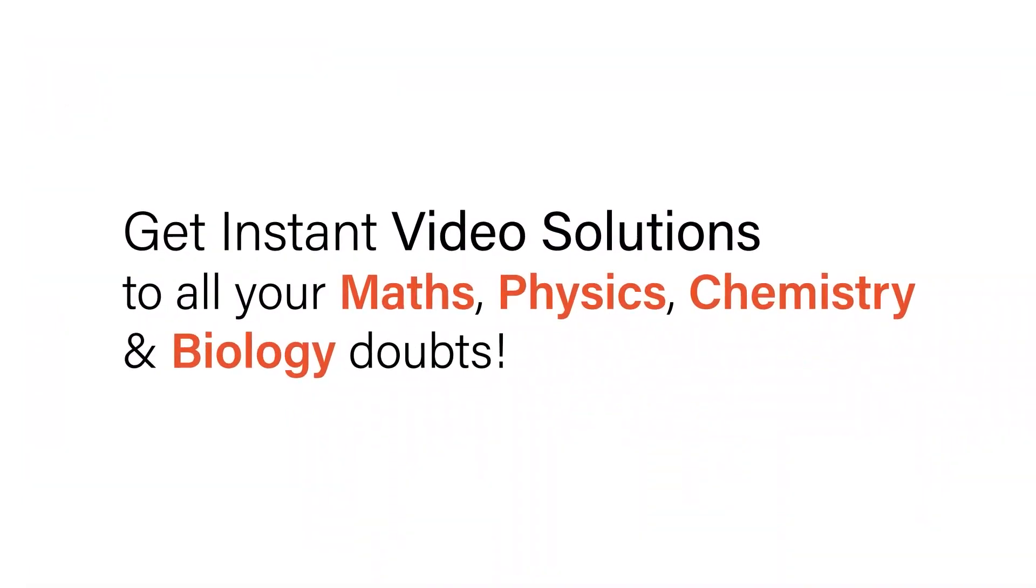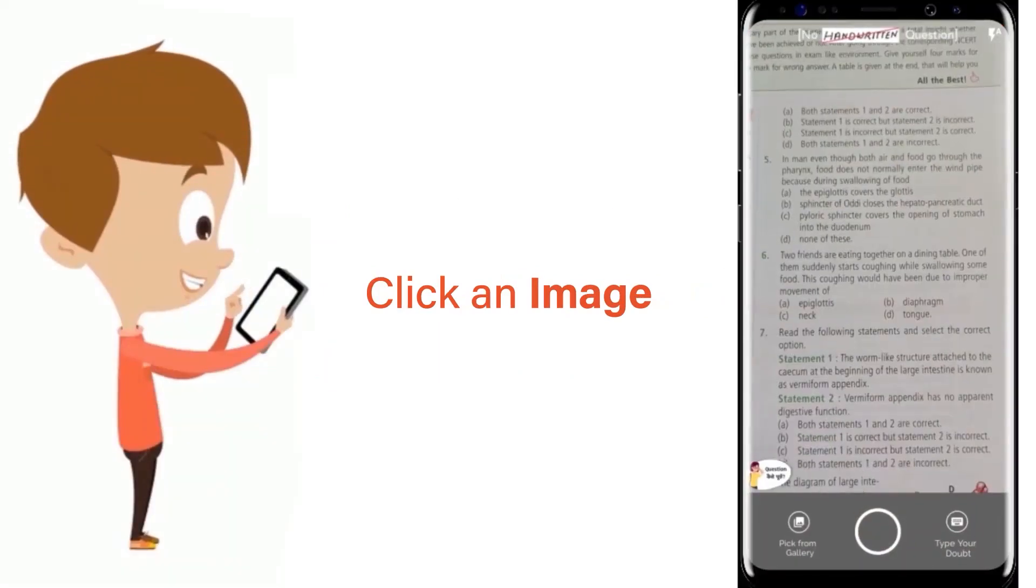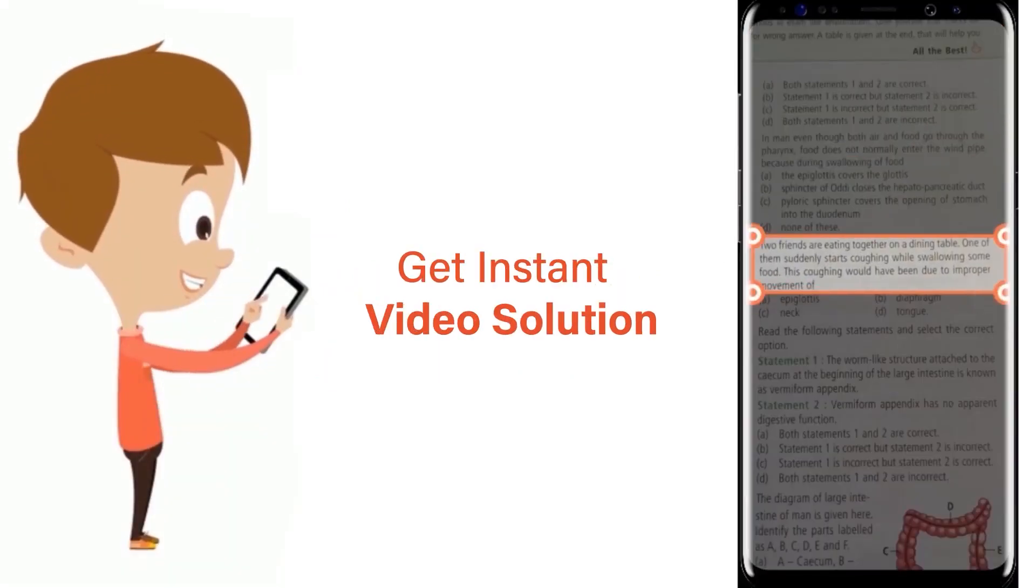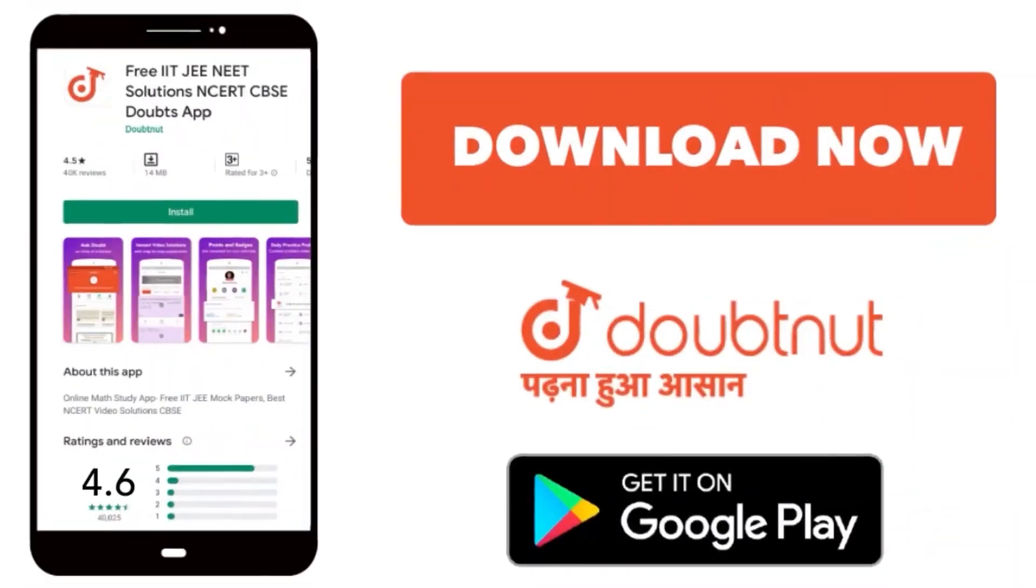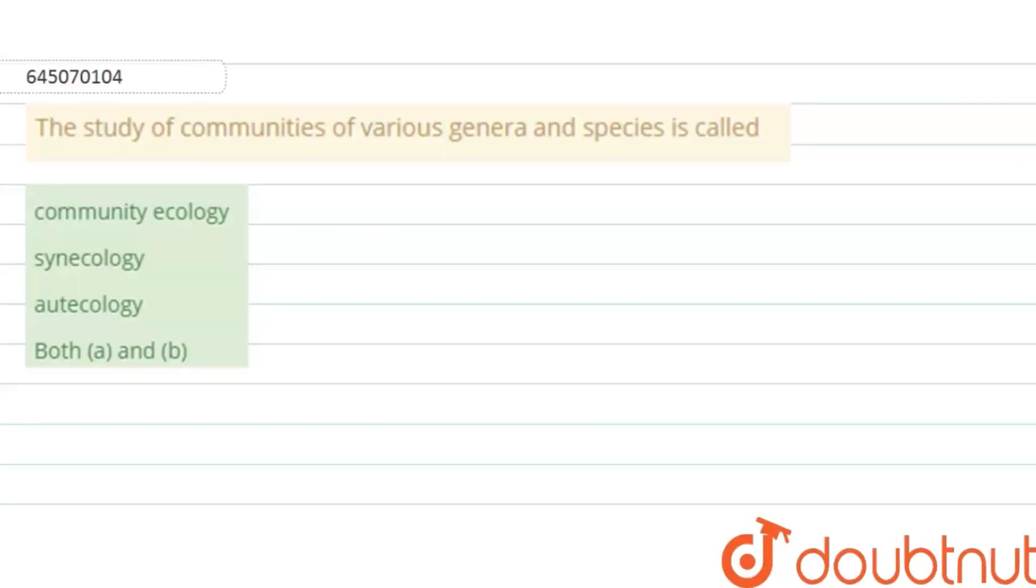With Doubtnet, get instant video solutions to all your maths, physics, chemistry and biology doubts. Just click the image of the question, crop the question, and get instant video solution. Download Doubtnet app today. Hello, the question is: the study of communities of various genera and species is called, and the options are community ecology, synecology, autecology, both a and b.